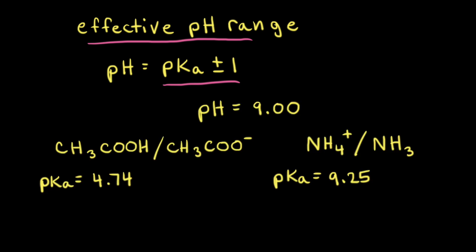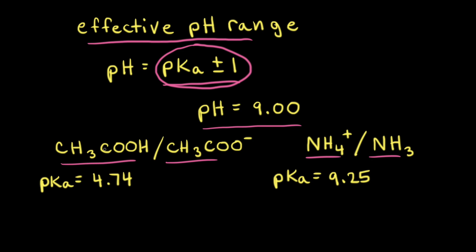Let's use this concept of an effective pH range to choose a buffer solution. Let's say we want to buffer a solution at a pH of 9.00 at 25 degrees Celsius, and suppose we have two choices: an acetic acid acetate buffer, or an ammonium ammonia buffer. Because the effective pH range of a buffer is plus or minus 1 of the pKa value of the weak acid, we don't want to choose the acetic acid acetate buffer solution, because at 25 degrees Celsius the pKa value for acetic acid is equal to 4.74. Therefore, this buffer would only be effective at a range of plus or minus 1 from 4.74, so about 3.74 to approximately 5.74.